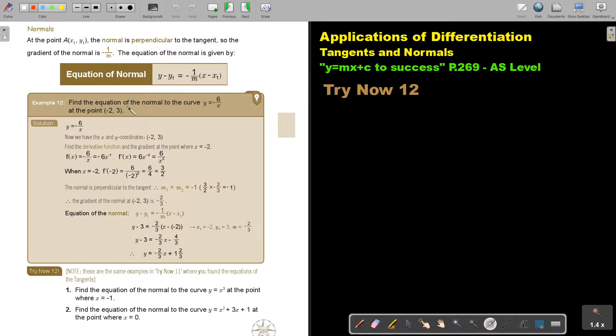So find the equation of the normal to the curve at this point. Now the first thing is we have to find the Y coordinate. Actually, we have the X and the Y coordinate, so we don't have to find it. Find the derivative function and the gradient at the point where X is negative 2. So first differentiate. Don't forget to bring the X up. It must be in the numerator. Now differentiate. Now you can bring it down. So when X is negative 2 and I substitute, I will get 3 over 2.